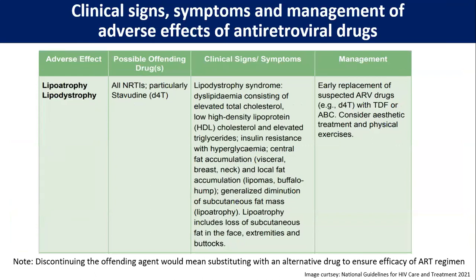All NRTIs can give rise to lipoatrophy and lipodystrophy, but the most common culprit was stavudine, which is no longer in the program, so we encounter lipodystrophy less frequently nowadays. Lipodystrophy is characterized by elevated total cholesterol, low HDL cholesterol, elevated triglycerides, insulin resistance with hyperglycemia, central fat accumulation (visceral, breast, neck), buffalo hump, and generalized diminution of subcutaneous fat — lipoatrophy — including subcutaneous fat in the face, extremities, and buttocks. Management is early replacement of suspected ARV drugs with tenofovir or abacavir, and consider aesthetic treatment and physical exercise.